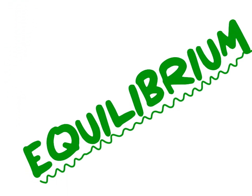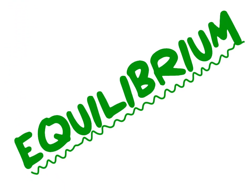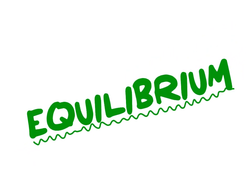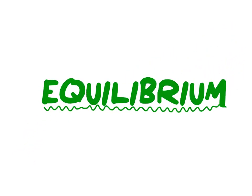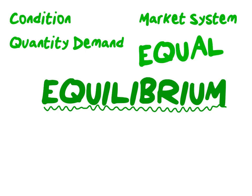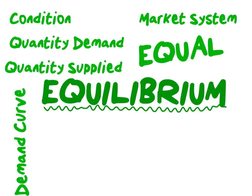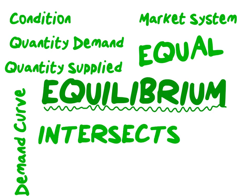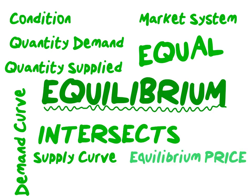Having done both part 1 and part 2, we can proceed to today's topic: equilibrium. Equilibrium can be defined as a condition in the market system where quantity demand equals quantity supplied. In other words, equilibrium is the condition in which our demand curve intersects our supply curve, indicating equilibrium price and equilibrium quantity.